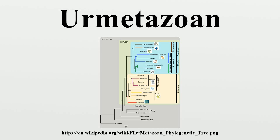Gastrea hypothesis: The gastrea hypothesis was proposed by Ernst Haeckel, shortly after his work on the calcareous sponges. He proposed that this group of sponges is monophyletic with all eumetazoans, including the bilaterians. This suggested that gastrulation and the gastrula stage are universal for eumetazoans.